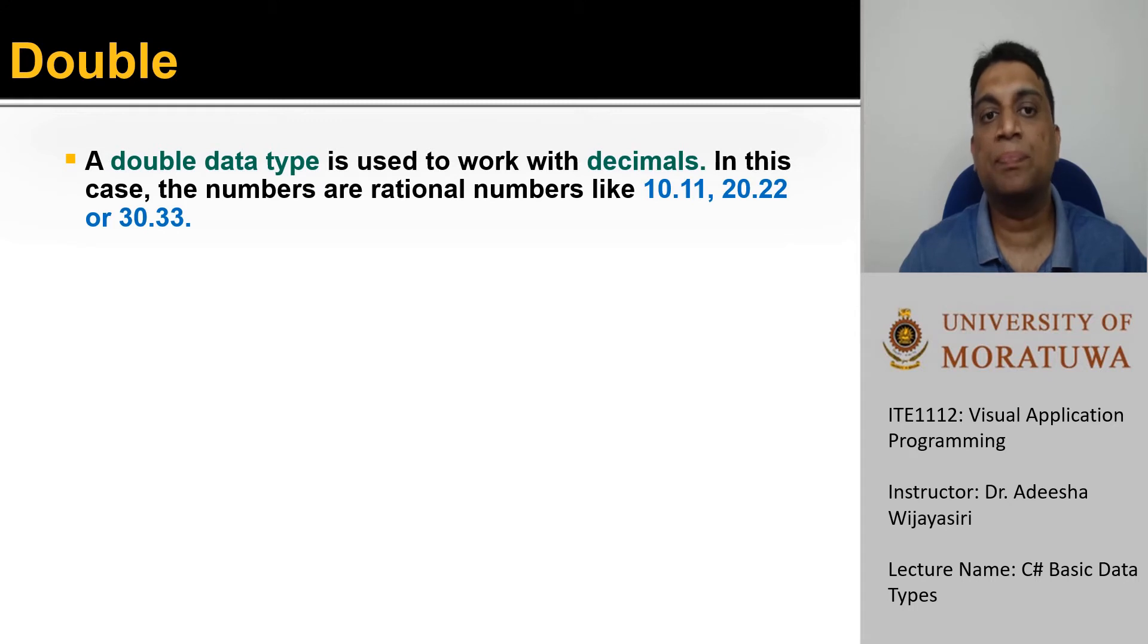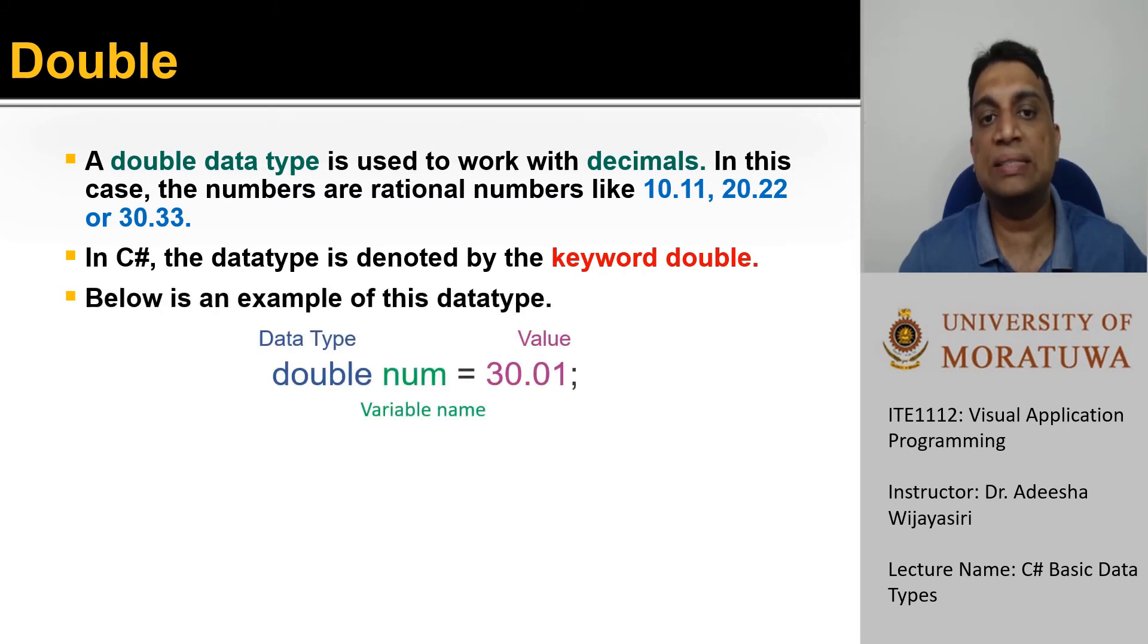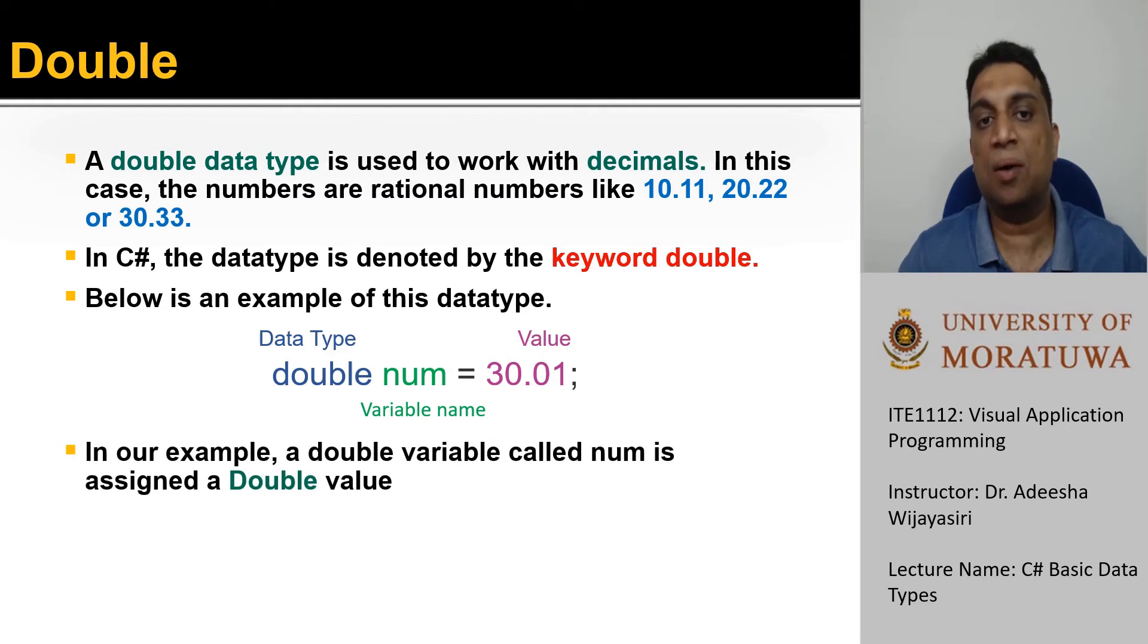Similar to the previous example, we can use the data type double to store double precision floating point numbers. In C sharp, this data type is denoted by the keyword double. We will discuss the range and the size of the data type at the end of this video. As you can see in this statement, usage of the double keyword in C sharp is similar to the previous example.